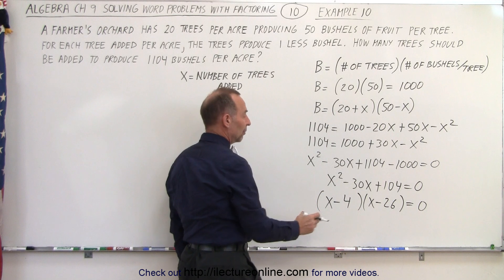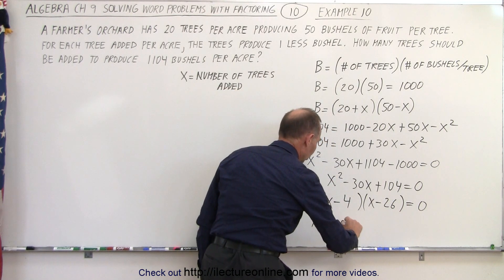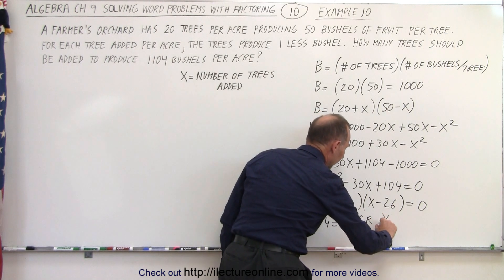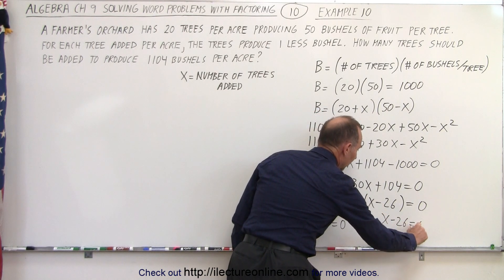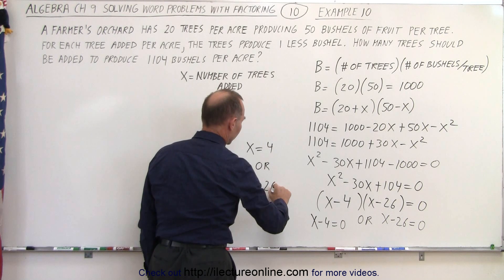Now that means if we multiply two binomials, we get 0, that either the first one is equal to 0 or the second one is equal to 0. Which means that either x equals 4 or x equals 26.